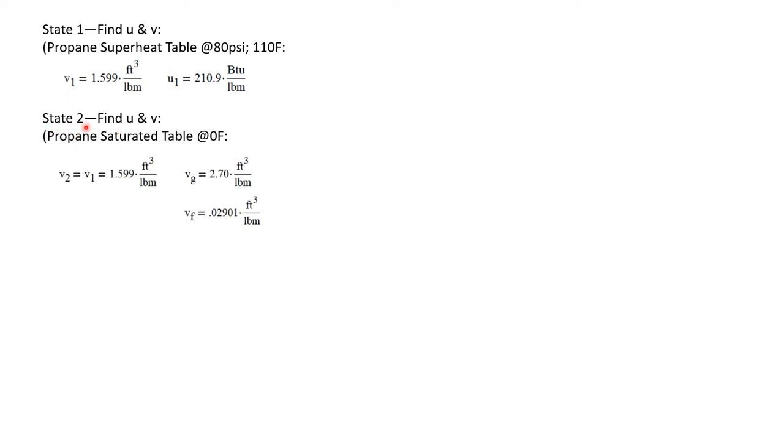Now let's find some properties for state two. I want to find U and V, so I'm going to go to the saturation table at zero degrees Fahrenheit. And I know the temperature is zero degrees. And I also know, because the process takes place in a rigid tank, that the specific volume at state two is equal to the specific volume at state one, which is 1.599 cubic feet per pound mass.